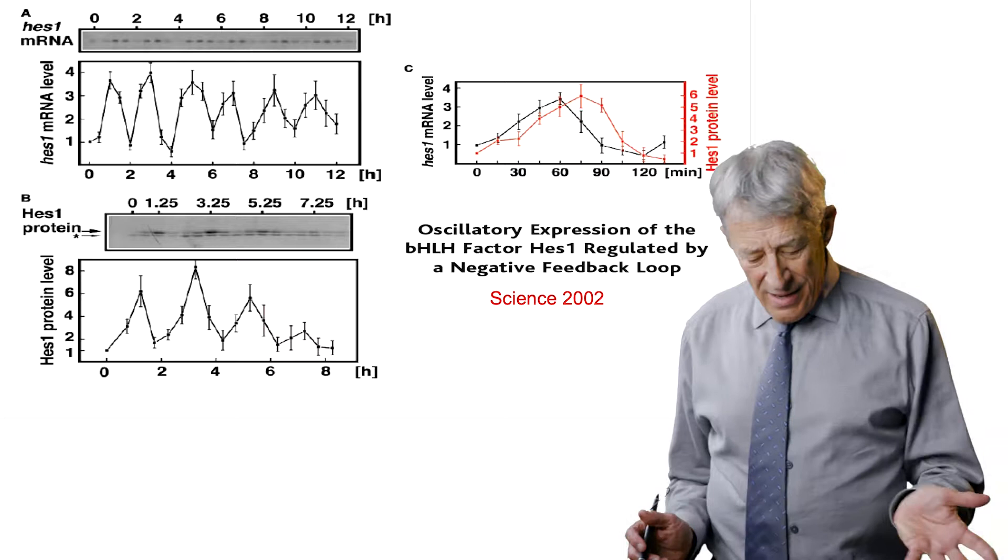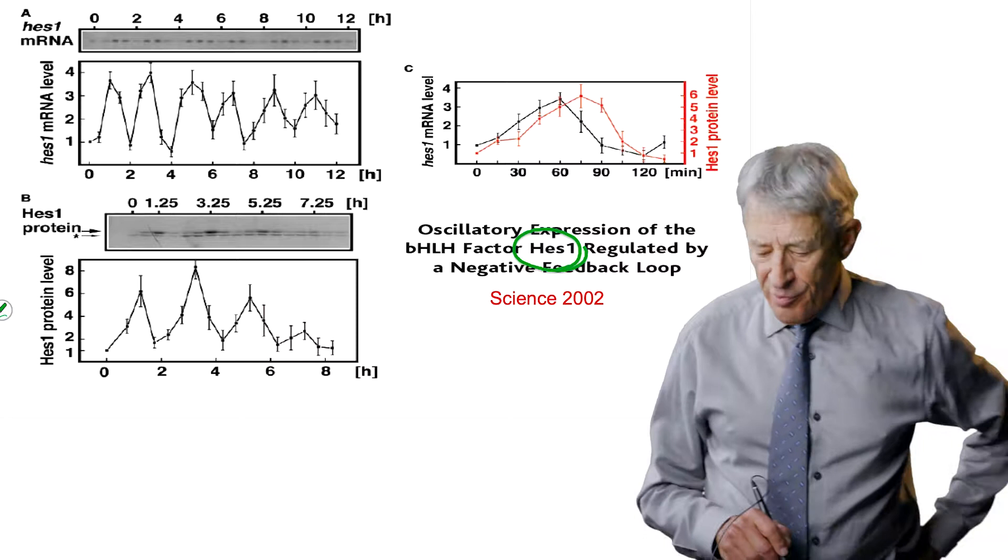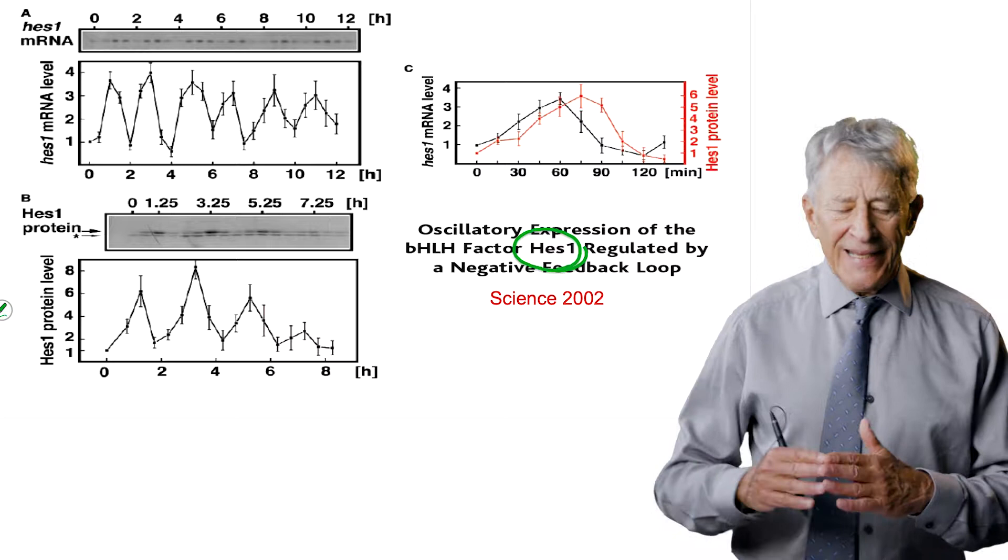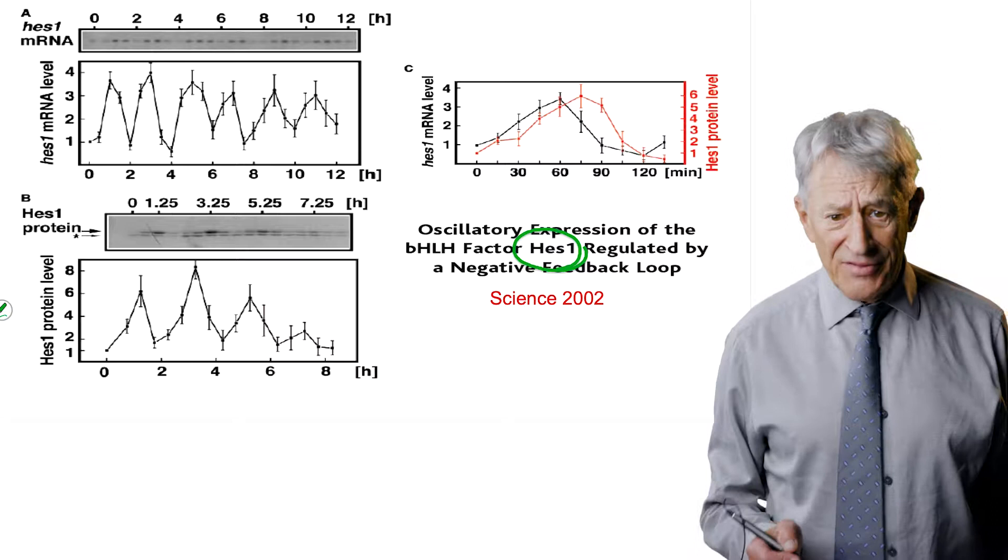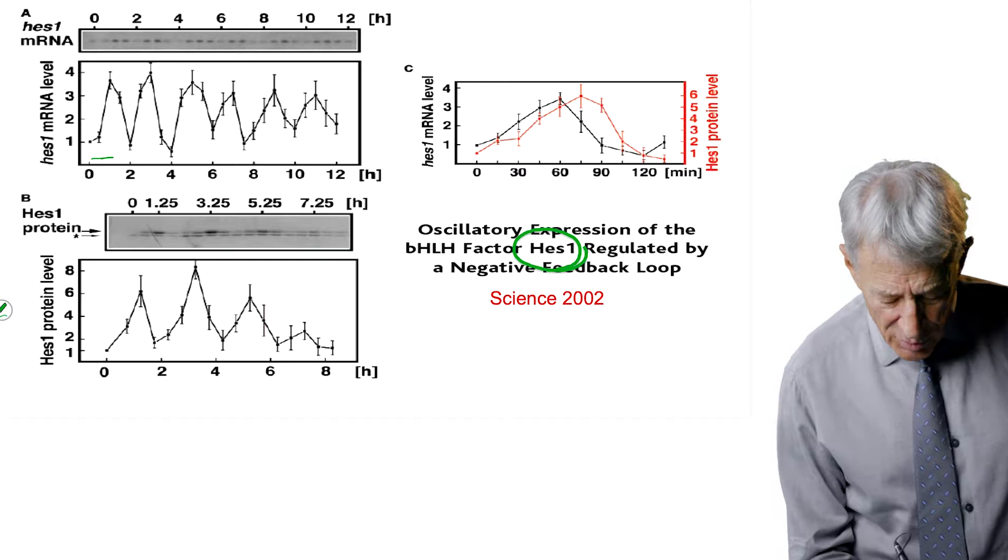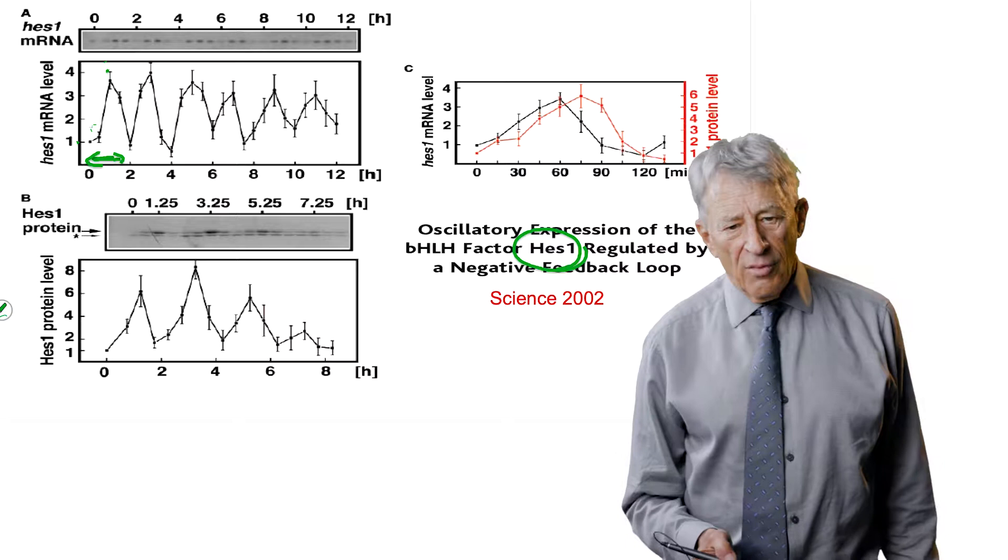Here's a very pretty paper that was in Science 15 years ago. Hes1 is a super important notch binding protein, which is very important in laying out the body plan in embryogenesis. These folks looked at it, and they saw a very interesting thing, which is that it oscillates over time. Gene expression oscillates with a two-hour period, and you will notice that it's going up and down by a factor of four.